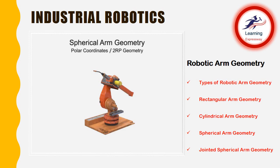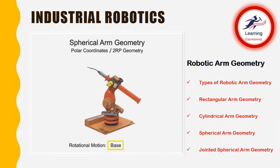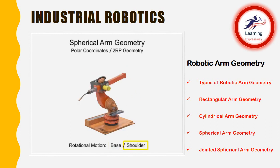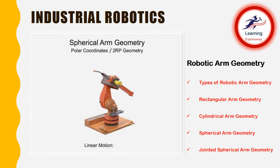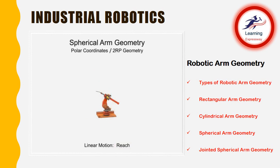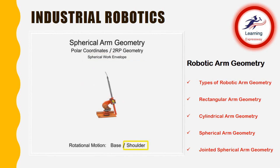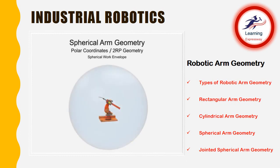Robotic arms with spherical geometry have rotational movement in two directions — rotational movement at the base and rotational movement at the shoulder. Spherical arm geometry robots also have linear motion in one direction, typically the reach of the arm. They have a mostly spherical work envelope at their outer reach, but are limited by the linear reach of the arm and the rotation of the shoulder joint. The shape of the robot's inner work envelope is almost conical and does not become a sphere until the arm extends.